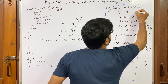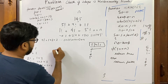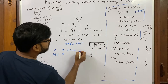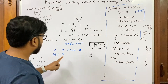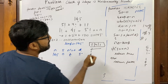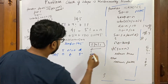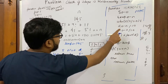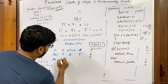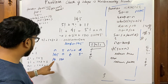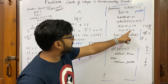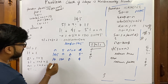Let's dry-run this for n = 145. s starts at 0, temp is set to 145. Condition n ≠ 0 is true. d = 145 % 10 = 5, n = 145 / 10 = 14, sum += factorial(5) = 120, so sum = 120. Next iteration: n ≠ 0 is true, d = 14 % 10 = 4, n = 14 / 10 = 1 (integer division).